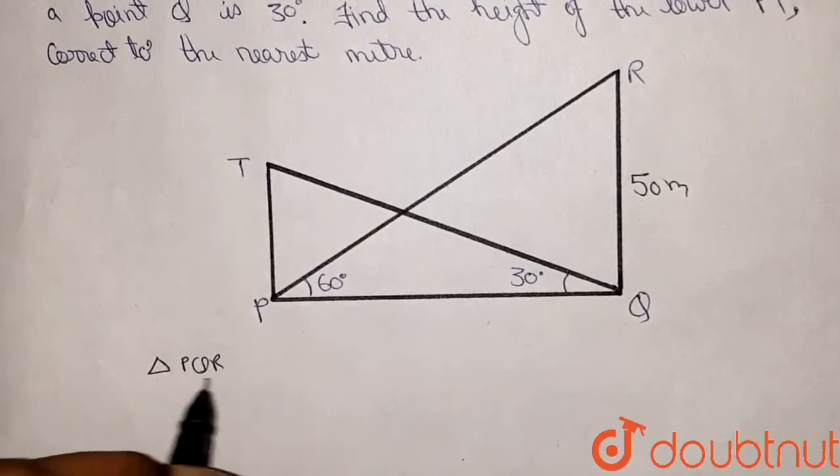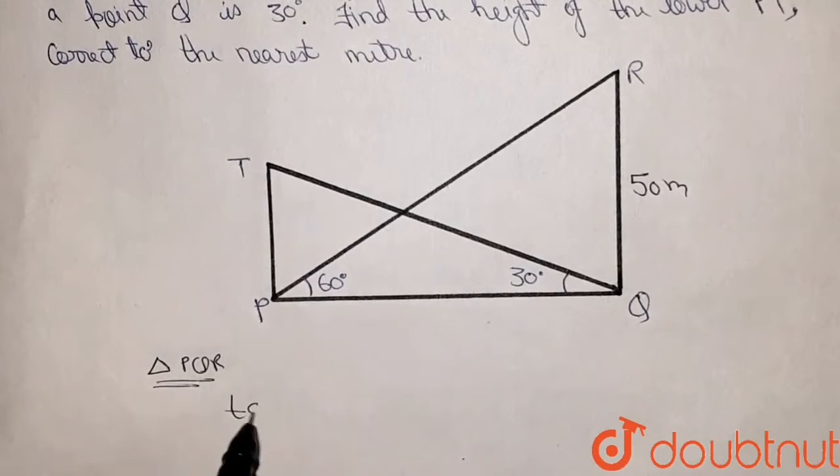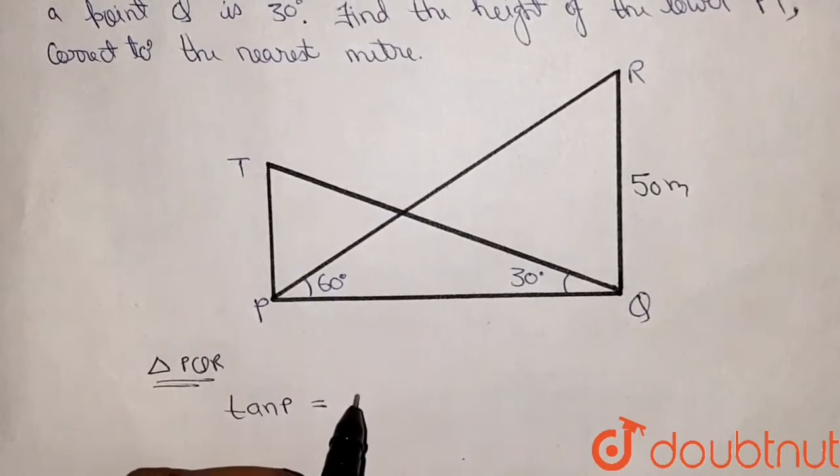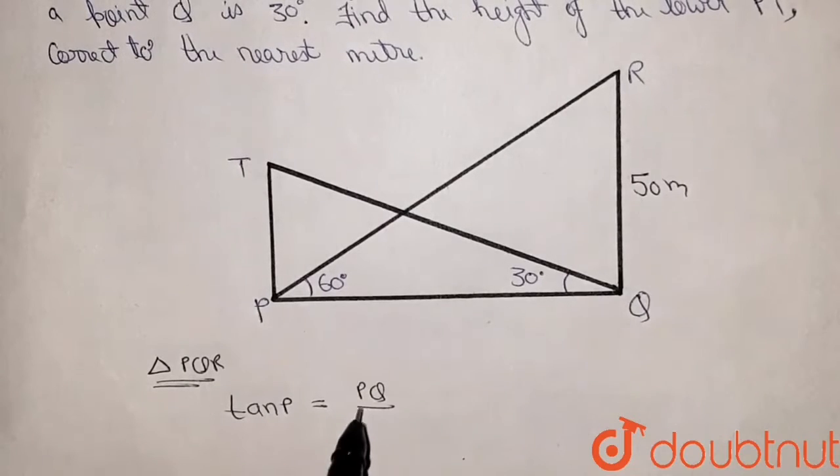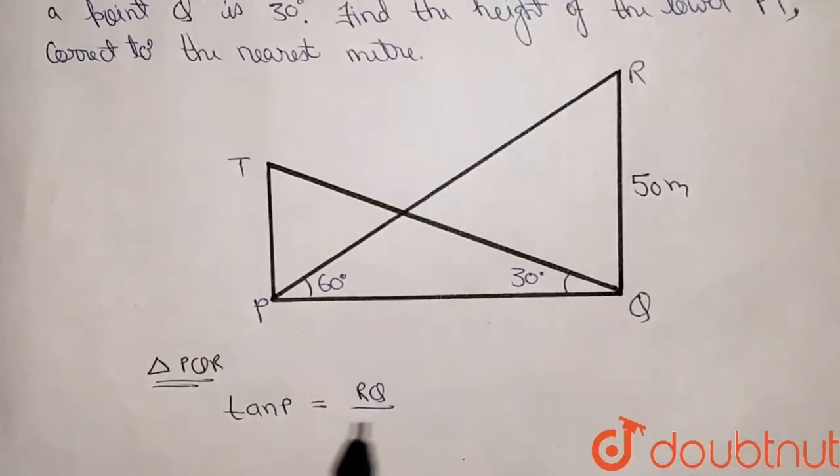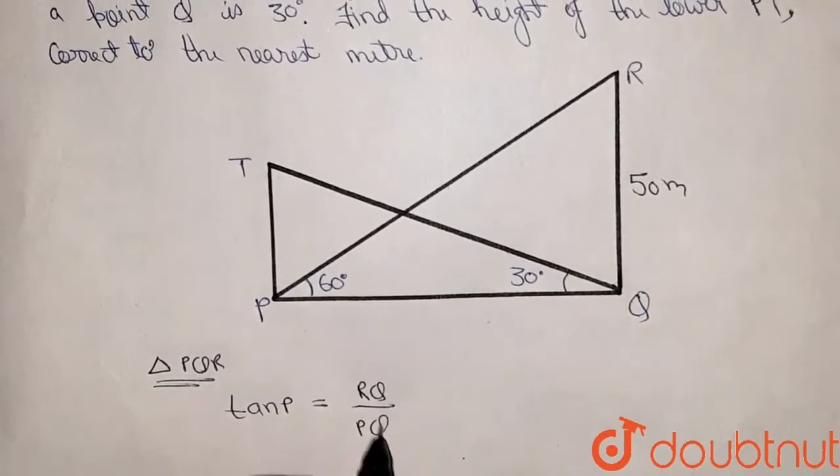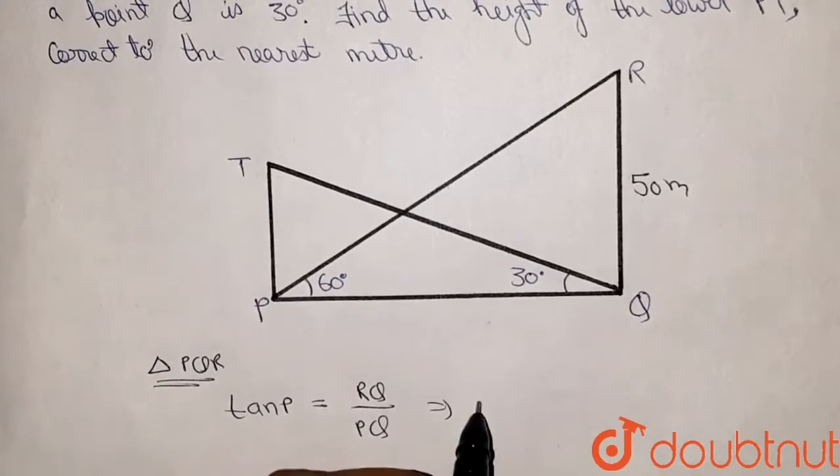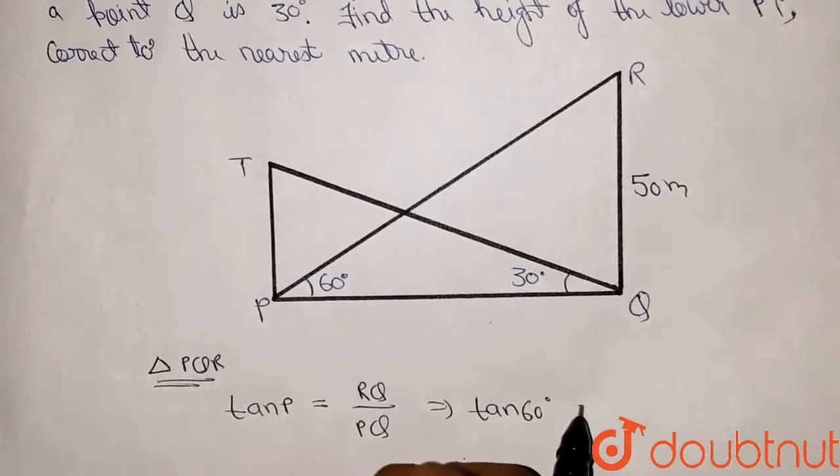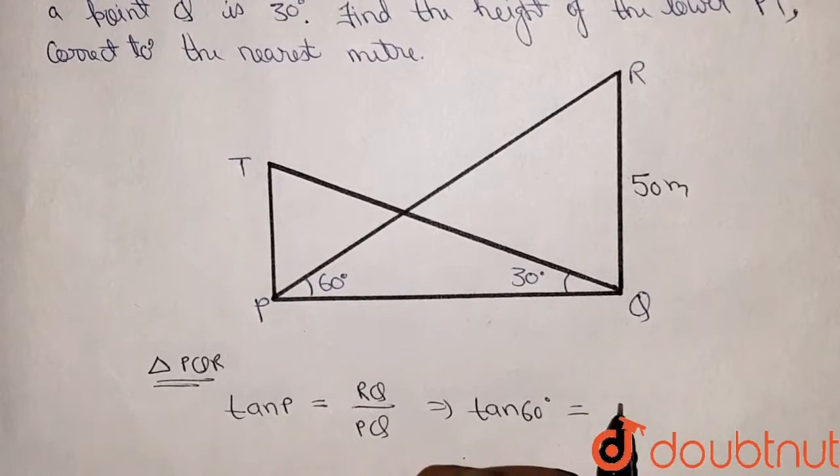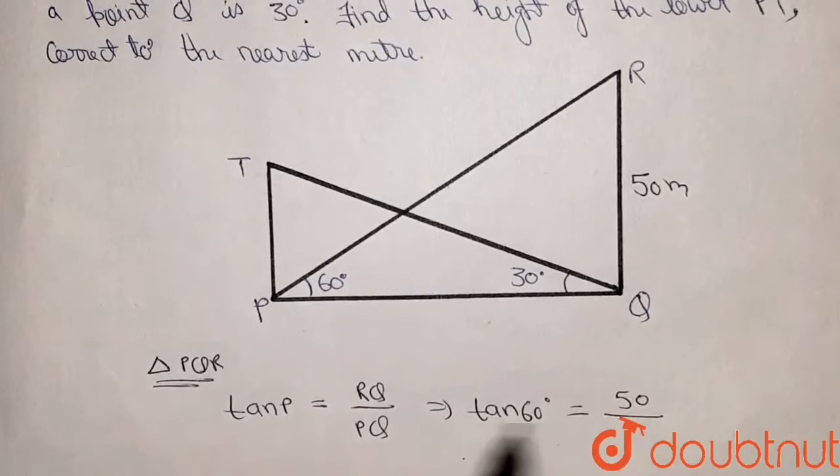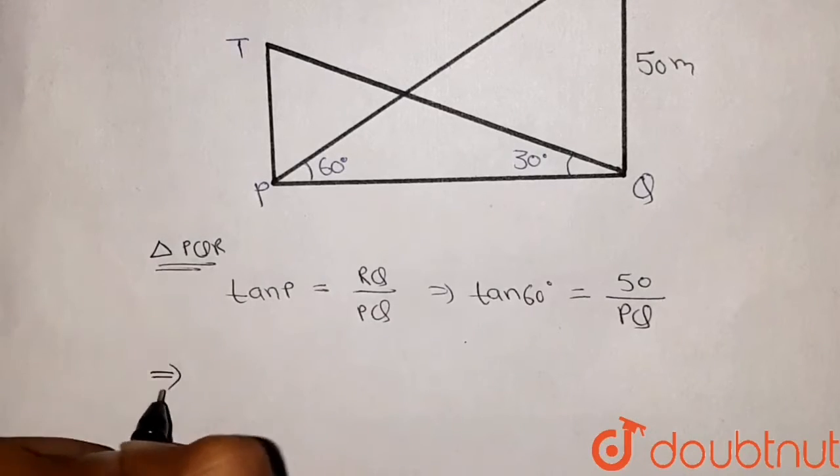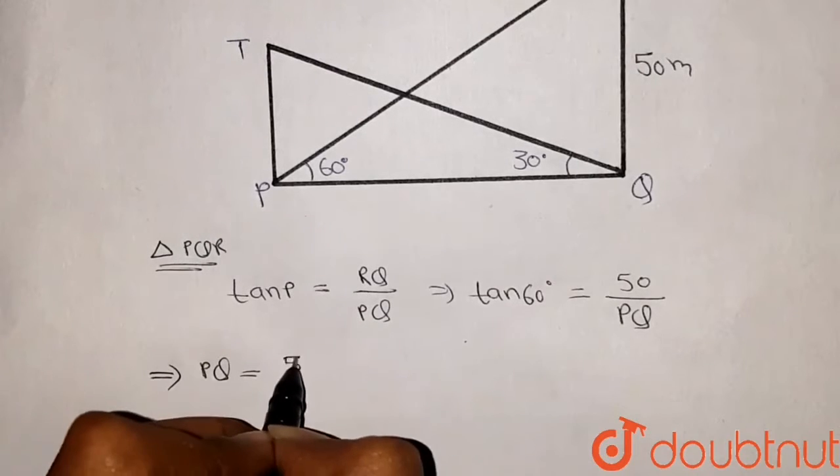I can write that tan of angle P should be equal to perpendicular, that is RQ, divided by base, that is PQ. Now angle P is given to us as 60 degrees, so tan of 60 degrees equals RQ, that is 50 meters, divided by PQ. So from here I can write PQ will be equal to 50 divided by